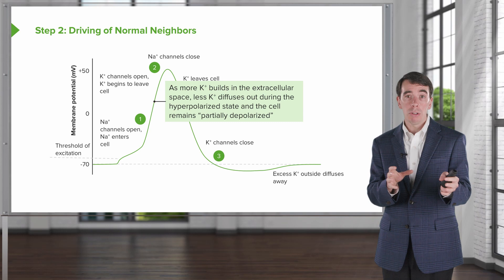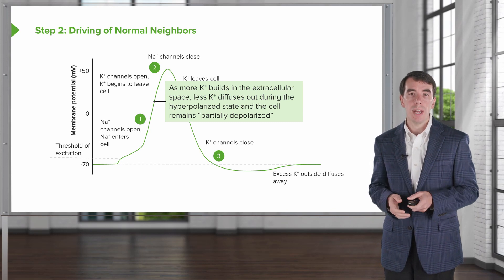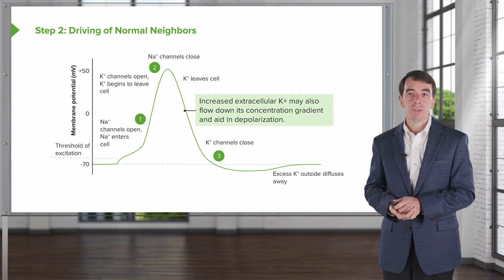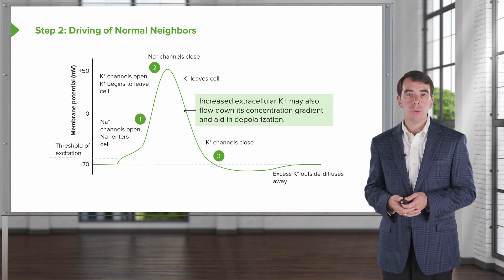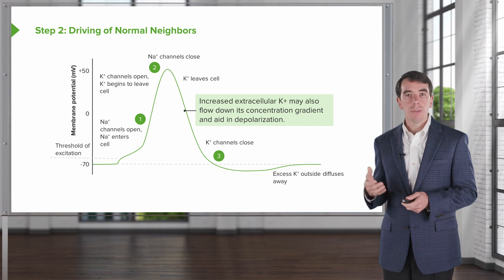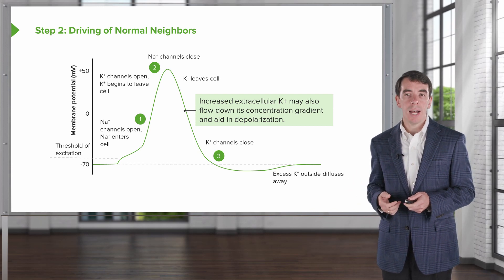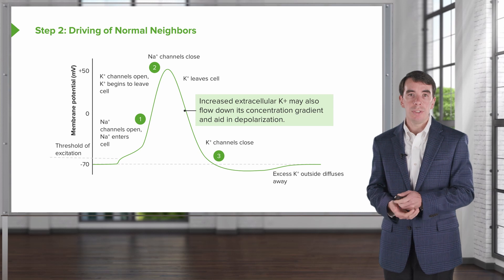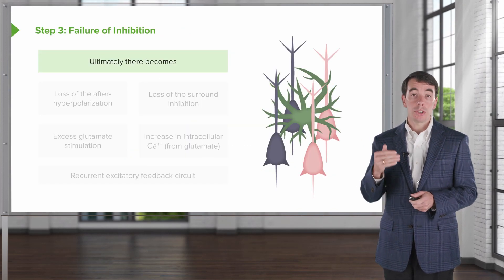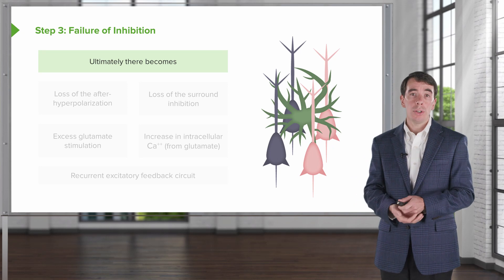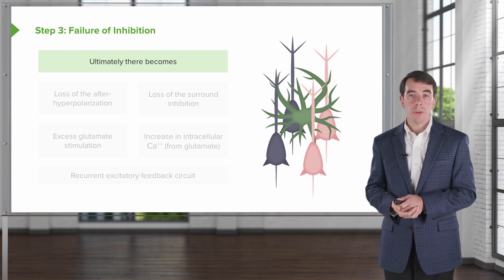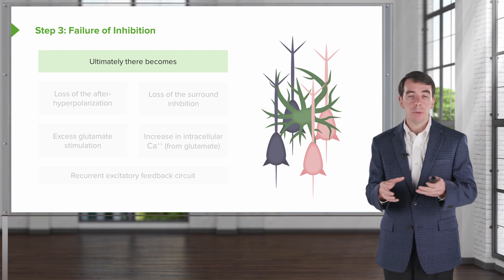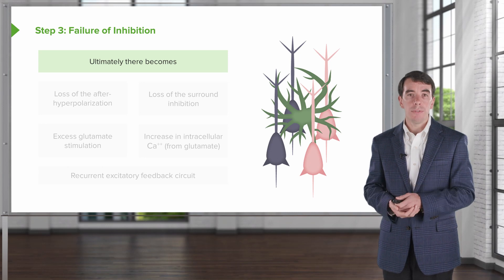As more potassium builds up in the extracellular space, less potassium diffuses from around the neurons during the hyperpolarization state of the cell, so neurons become partially depolarized — they're always ready to fire. Increased extracellular potassium may also flow down its concentration gradient and aid in depolarization. This is the process that contributes to driving of normal neighbors and the onset of a seizure. The third step, which is critical to the development of long-term epilepsy, is failure of inhibition, resulting from repeated paroxysmal depolarization shifts and driving of those normal neighbors.